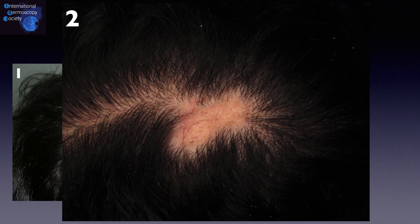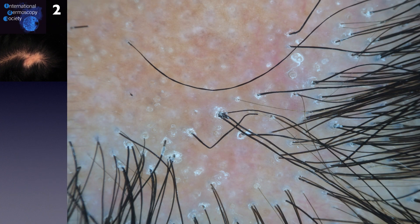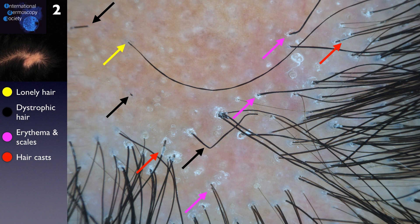Now the second case shows discreet erythema, scaling, and a lonely terminal hair in the center of the patch. Again, dry tricoscopy is important: the lonely terminal hair is in fact a polytrichia due to intense inflammation around it. It is possible to see other dystrophic hairs such as broken hairs and black dots. Furthermore, there is intense peripheral erythema and scales forming hair casts in some areas, and an almost complete absence of vellus hairs with normal scalp skin in the center. Large white areas representing follicle scars and pinpoint white dots are also seen.